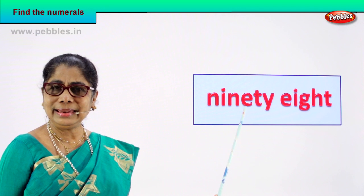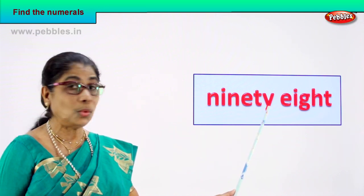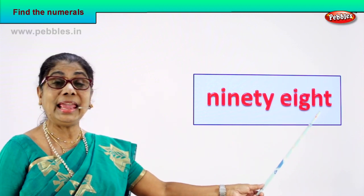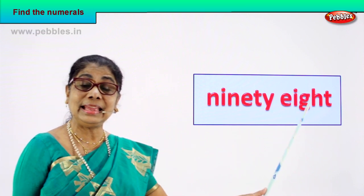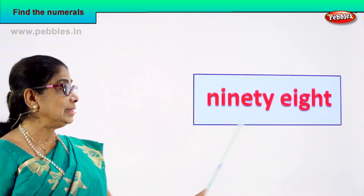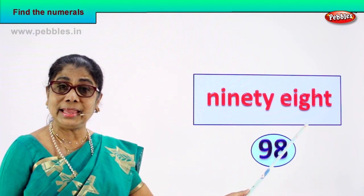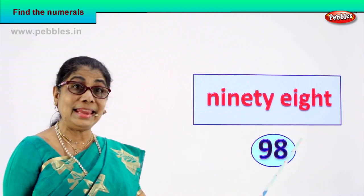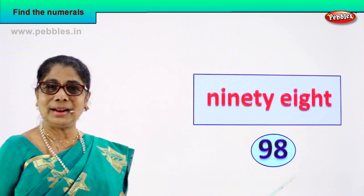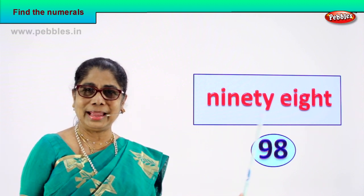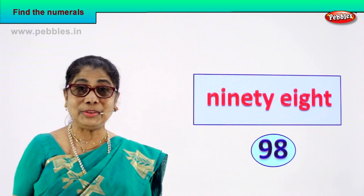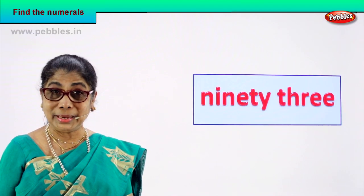Read: N-I-N-E-T-Y, 90, E-I-G-H-T, 8 — 98. 98 is the number name, but where is the numeral? How could you write 98? Very good — 9 and 8, 98. So you learn the numeral and its name: 98 is written as numeral 9 and 8.